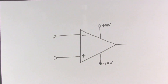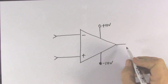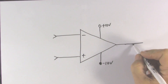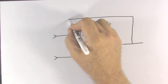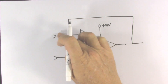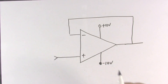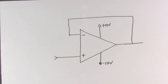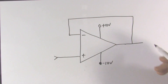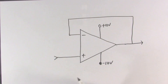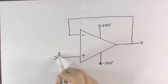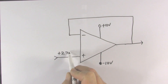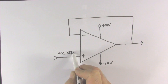For the voltage follower, we simply take the output of the op-amp and run it back to the inverting input. There is the voltage follower. Let's take a look at what this circuit does — let's put a voltage at the input, how about plus 2.751 volts.